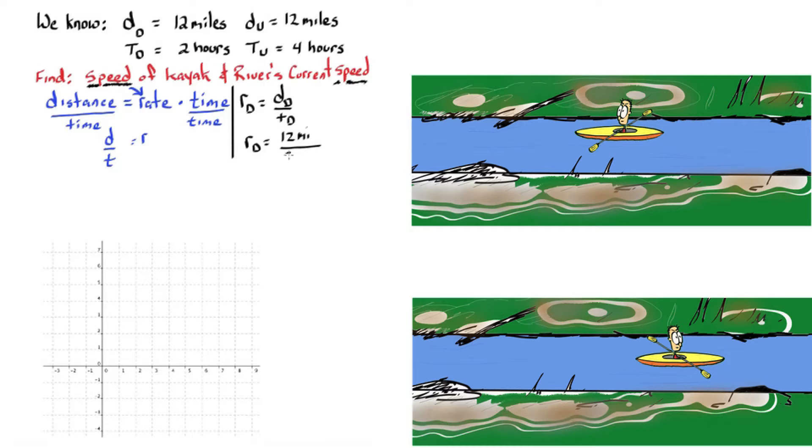We can substitute our knowns, 12 miles and 2 hours, and 12 miles in 4 hours to find our rates downstream and upstream.